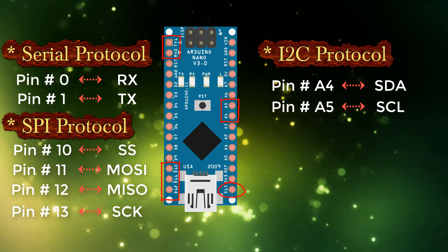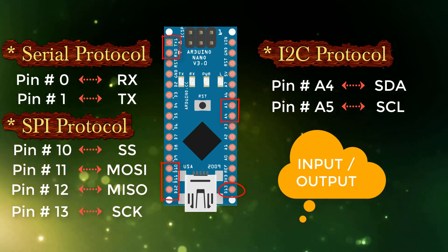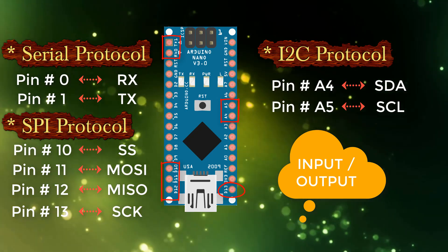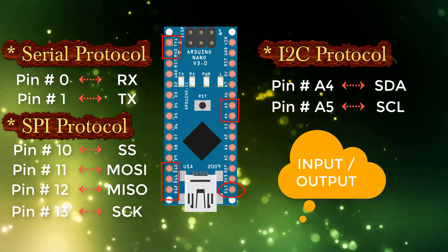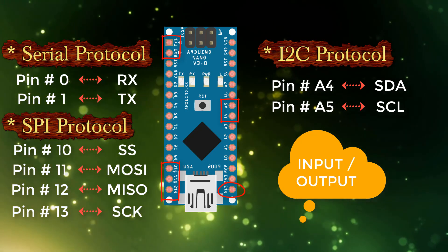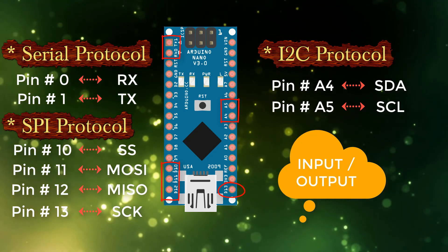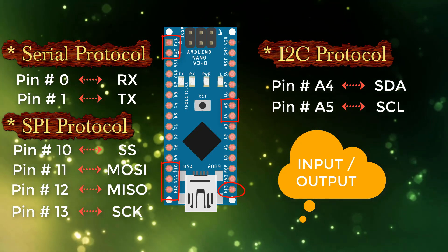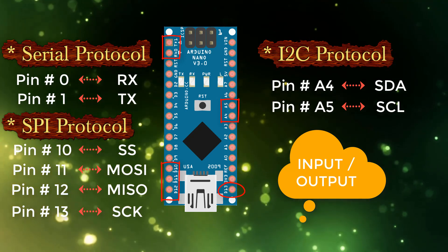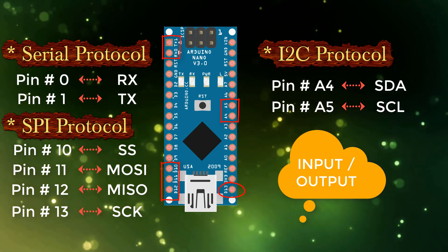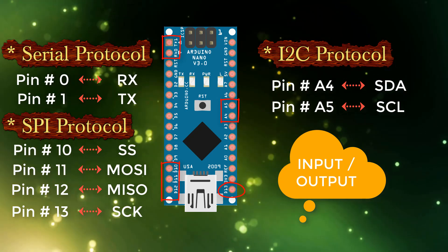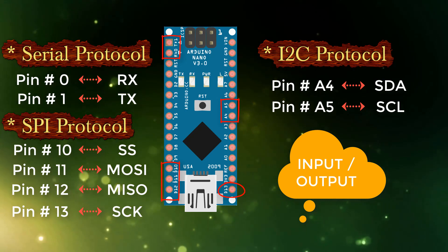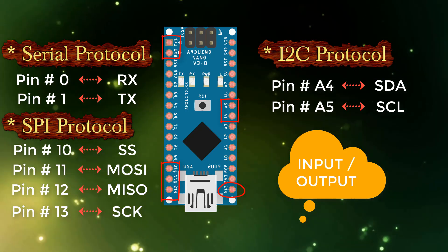We can use these pins as input or output and can also perform these different types of communications — it totally depends on our project's requirement. For example, if we have a GSM module which works on serial protocol, then we have to interface that module with pin number 0 and pin number 1. Similarly, if we are working on some RTC module, RTC works on I2C protocol and we have to interface that module with A4 and A5.